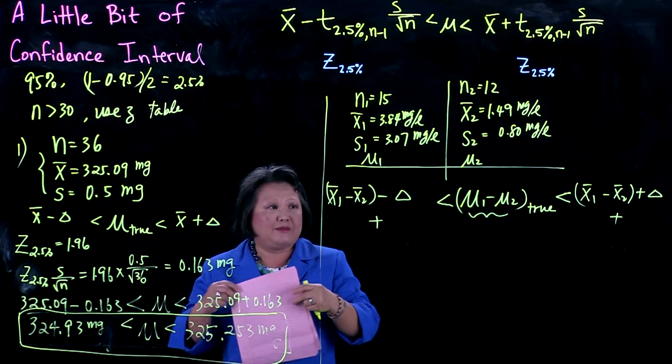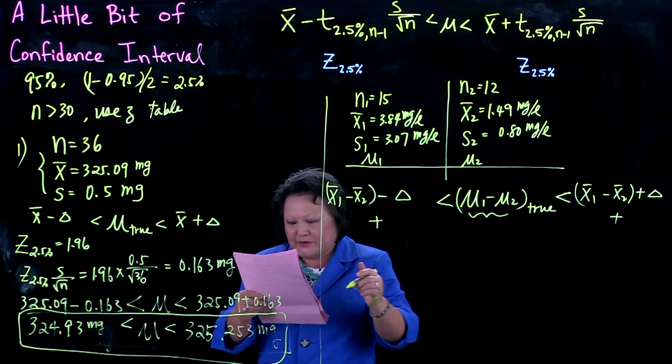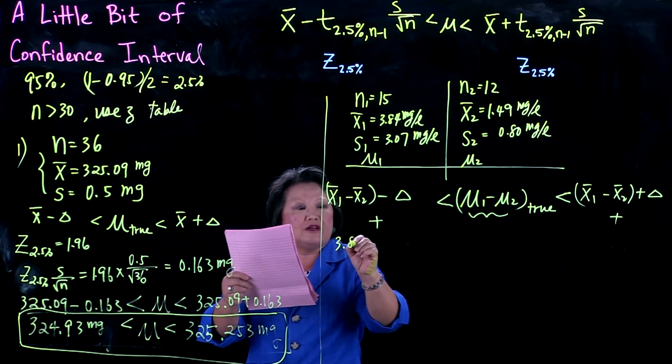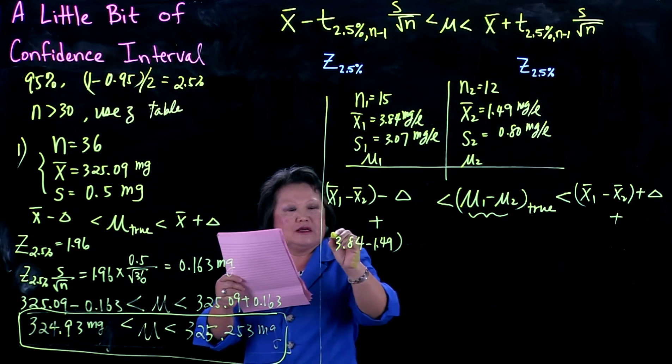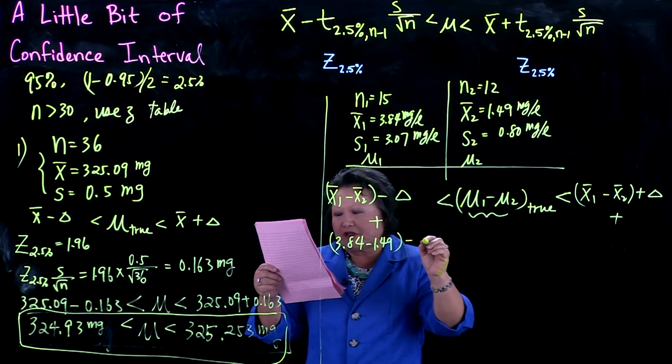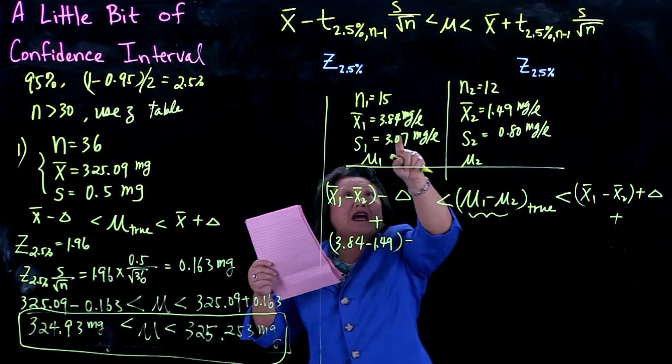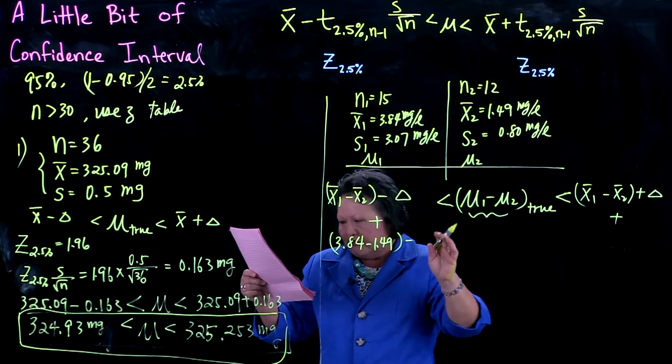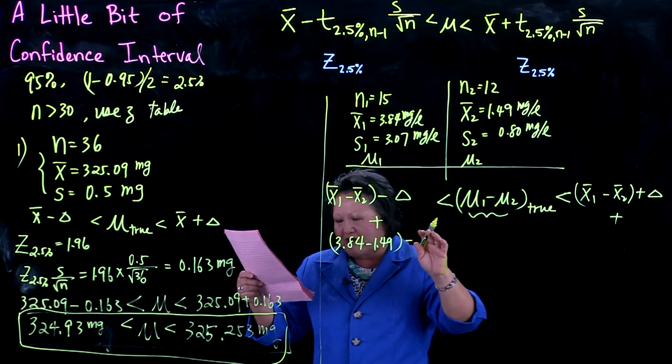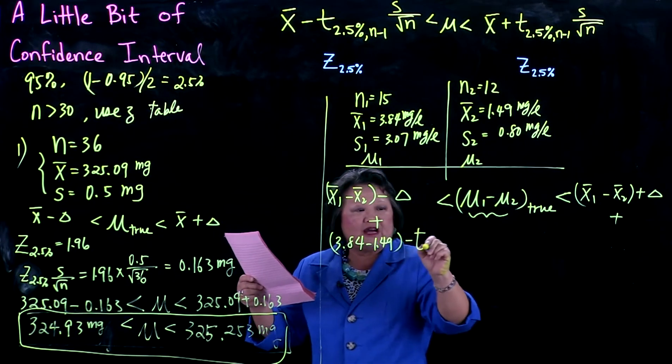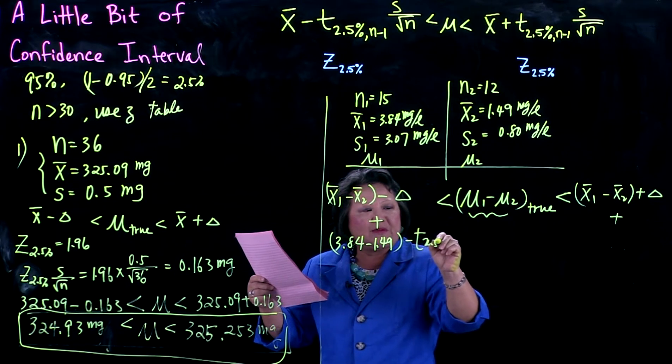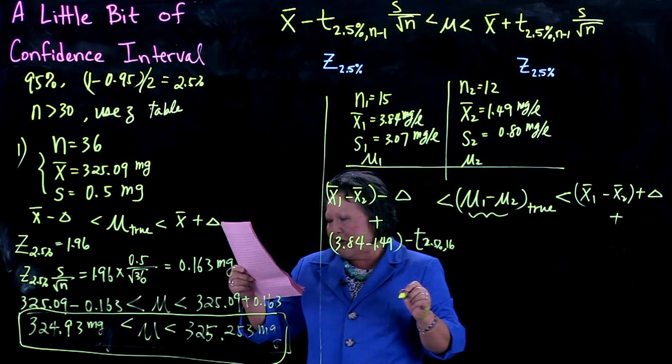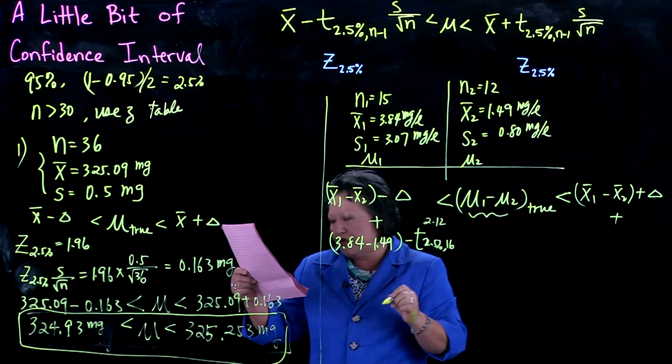Based on this particular example, you would have 3.84 minus 1.49. This number here is a t-value. I only have less than 30, so I've got to use a t-value with a combined degree of freedom of 16, which takes some calculation. The t-value that leaves 2.5% to the right with degree of freedom 16 is 2.12.